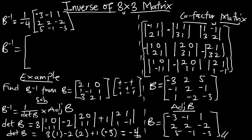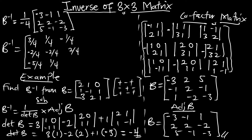You multiply through by 1 over -4 for every member. We know how to multiply a scalar by a matrix. This is going to give us: 3/4, 1/4, -1/4 and -2/4, -2/4, 2/4 — and on the third row, that will be -5/4, 1/4, and 3/4.